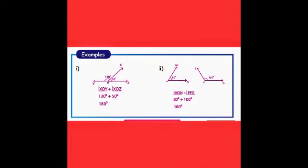Let us look at examples. In the first picture, we have two angles: 130 degrees and 50 degrees. Adding them, 130 plus 50 equals 180 degrees. Therefore, 130 and 50 are supplementary angles. In the second picture, we have 80 degrees and 100 degrees. Adding them, 80 plus 100 equals 180 degrees.